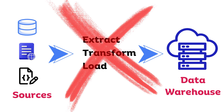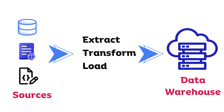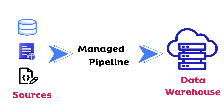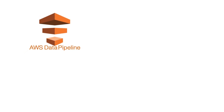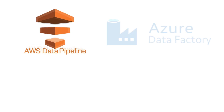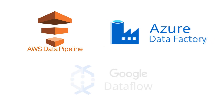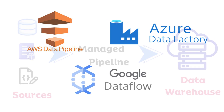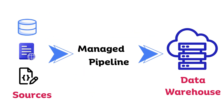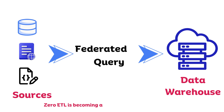These steps are replaced by managed pipelines. Managed pipelines are services that allow users to specify the source, target, and frequency of data refresh along with other configurations. Some of the popular services available in the market are AWS Data Pipeline, Azure Data Factory, and Google Dataflow. Additionally, with more and more platforms supporting federated queries, zero ETL is becoming a reality way quicker than ever.